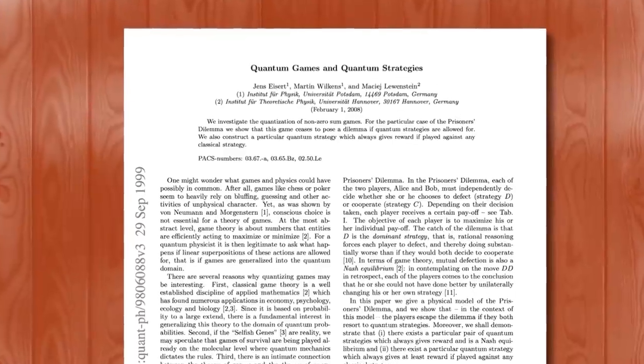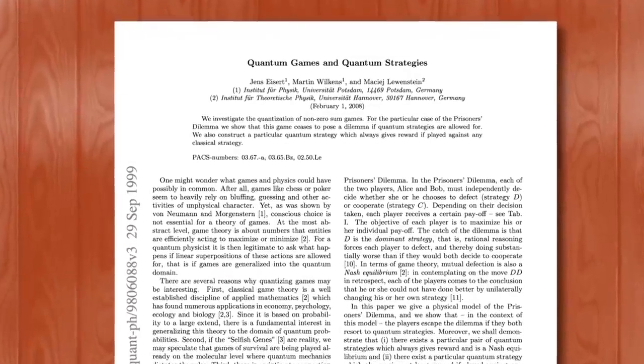This is the catch of the prisoner's dilemma: what's best for the individual isn't what's best overall. Now if we introduce some quantum rules we can actually do away with the catch. In other words, we can guarantee that if you both stay quiet you won't get screwed over by the other player. I found a science paper which outlines it perfectly. This is how it works.